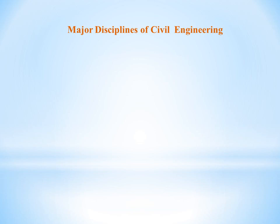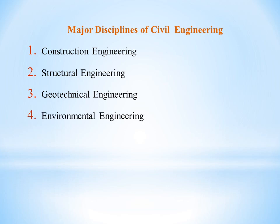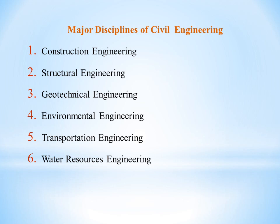The major disciplines of civil engineering are: first, construction engineering; second, structural engineering; third, geotechnical engineering; fourth, environmental engineering; fifth, transportation engineering; sixth, water resource engineering; and seventh, surveying and remote sensing. For example, transportation engineering includes traffic engineering, and water resource engineering includes water supply systems.